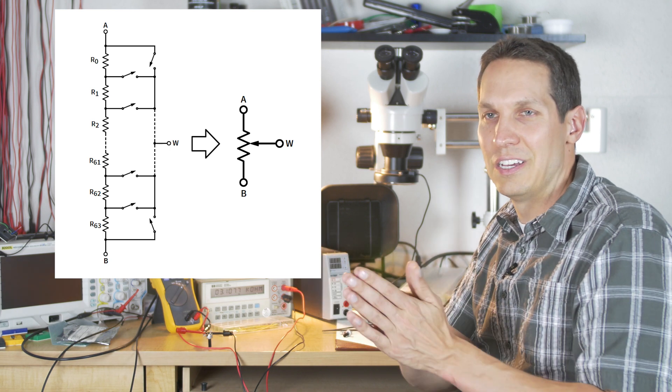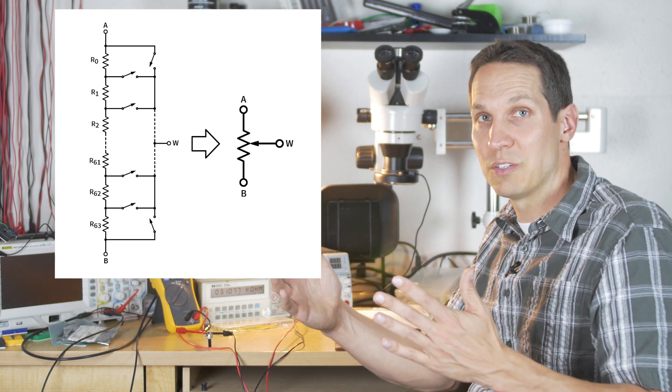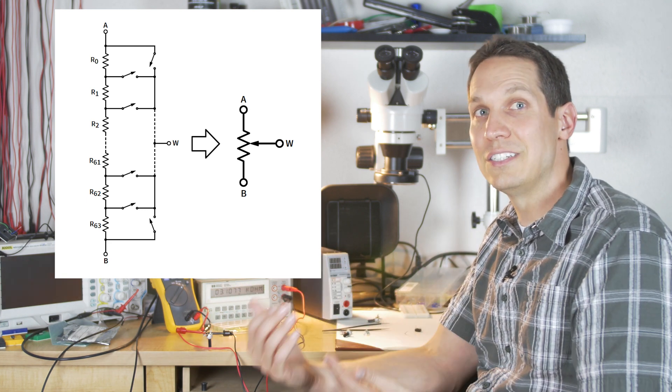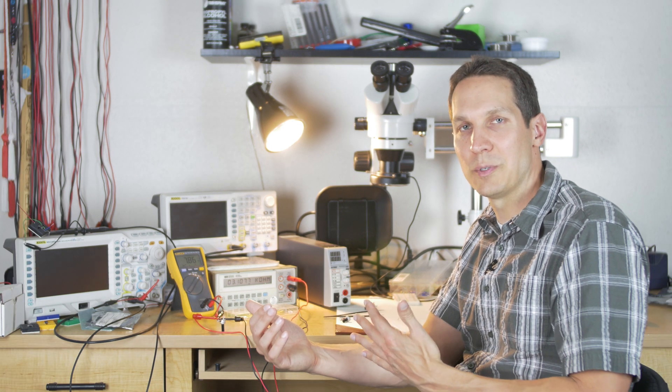All that is is an array of resistors, sometimes the same value, sometimes different values, and then they open and close switches to give you exactly what you want. That's how a digital potentiometer works.